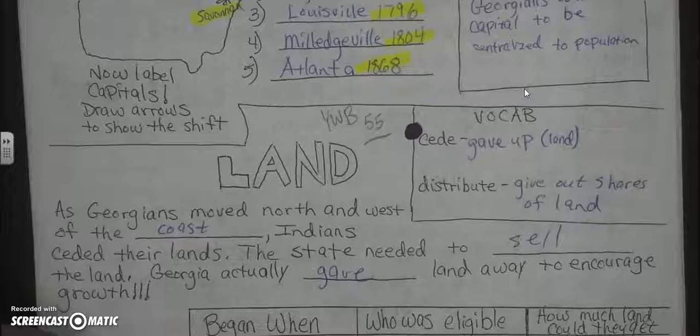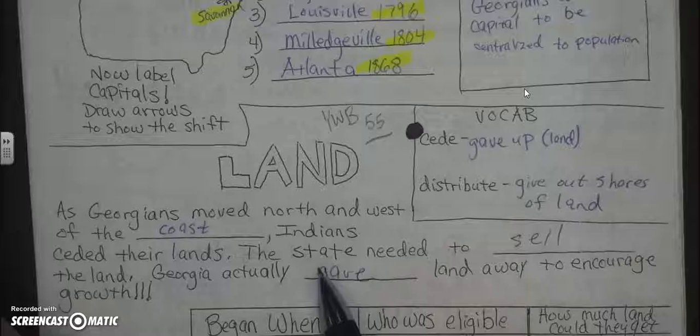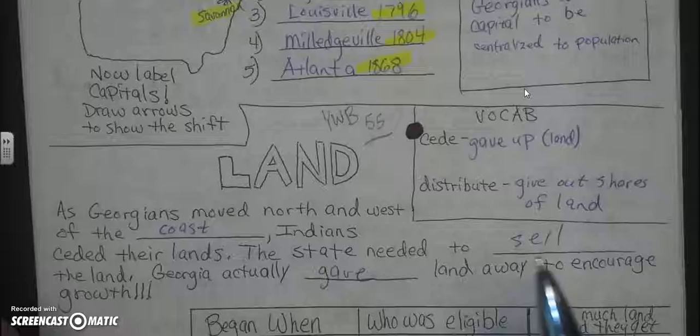Then we talked about land in Georgia. Remember that Georgia at the time included what is today Georgia, Alabama, and Mississippi. Georgians moved north and west of the coast. Indians ceded their lands — the word 'cede' means to give up. The state needed to sell land, and Georgia actually gave land away to encourage growth.